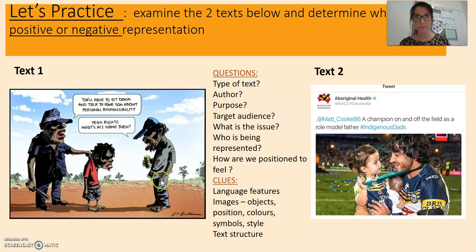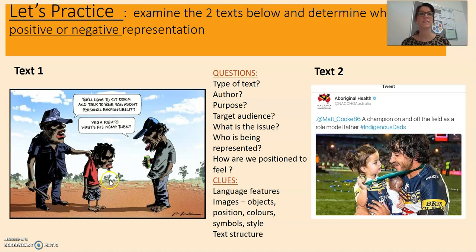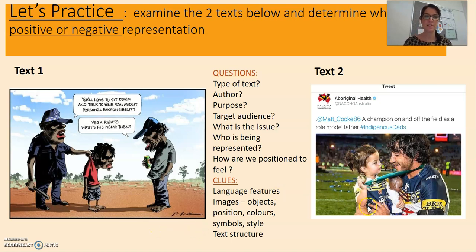Text one is a political cartoon showing an image of a father and his Aboriginal son brought home by the police, with the caption 'You'll have to sit down and talk to your son about personal responsibility' — and the father responds 'Yeah, righto. What's his name?' You can see that this is a stereotype — it makes us assume that all Aboriginal fathers are irresponsible. That is contrasted with text two, which shows Jonathan Thurston and his daughter at the grand final in 2015, presenting a very different image of an Indigenous father.